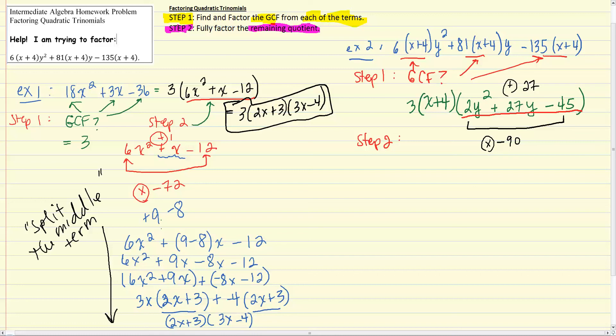So when we ponder that for a bit, we find that the factors of negative 90 adding to positive 27 is going to be plus 30 and a minus 3. So we need to rewrite 2y squared plus 27y minus 45, splitting the middle term using 30 and negative 3: 2y squared plus 30y minus 3y minus 45. Notice, when we split the middle term, we're not changing the value of the expression. That's why we're able to do it. It just happens to be that when we split it, we found the factors. We split it such that we can always find common factors so that we'll be able to factor it.